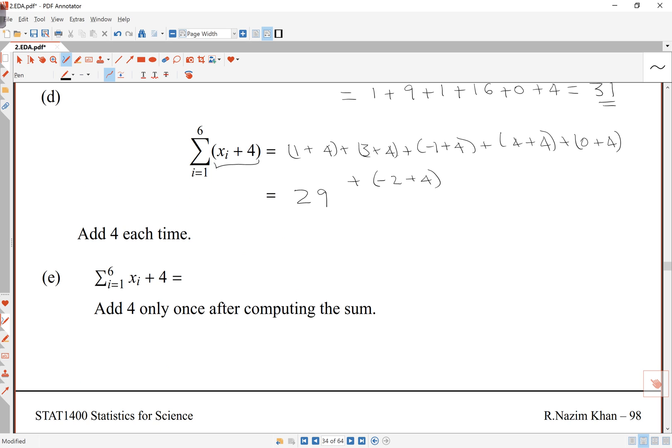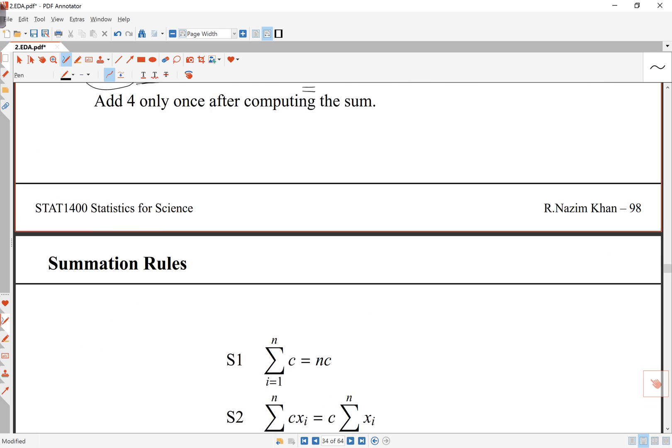This other form looks similar. This one here looks similar to the previous one, but it's different. Here, I'm adding 4 each time because of the bracket, and here I'm adding 4 only once. So this is going to be essentially, if I look at this part over here, previously for that I had got 5, and I'm just adding 4 to that, and I'm getting 9 out of that.